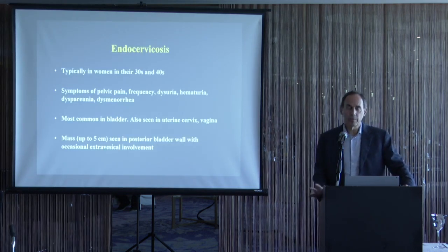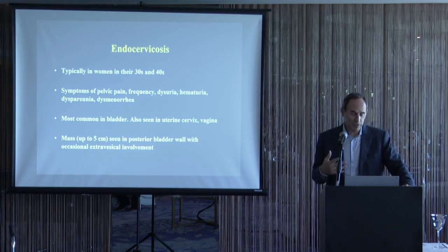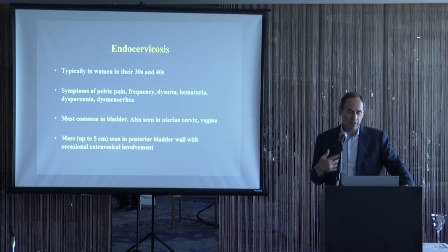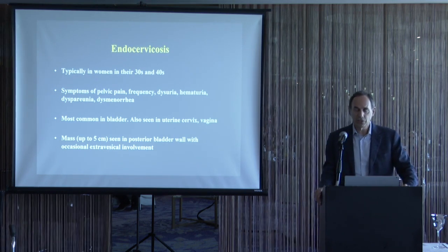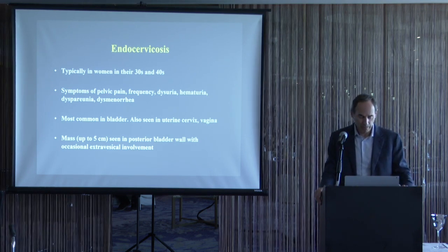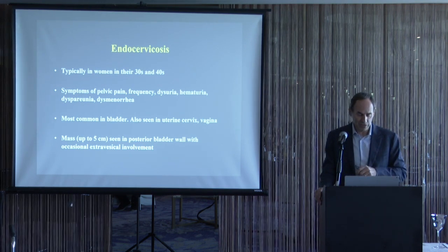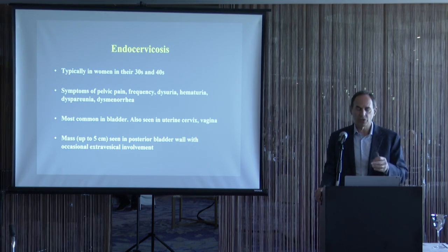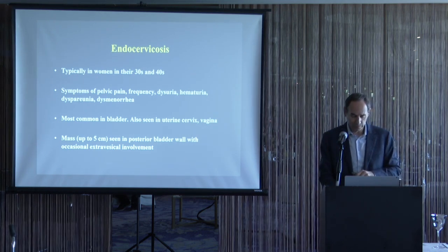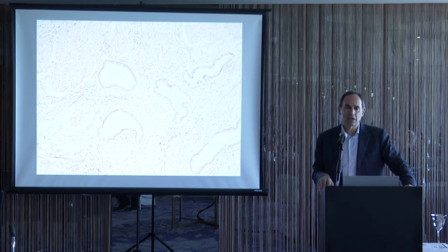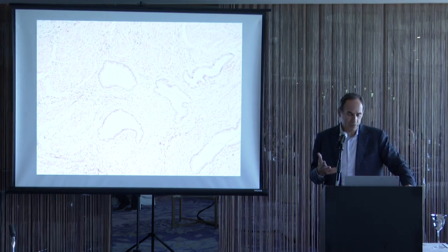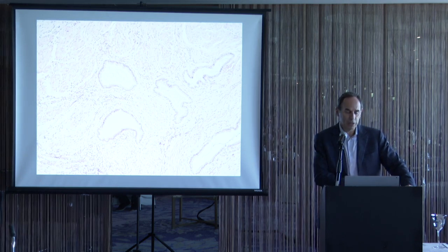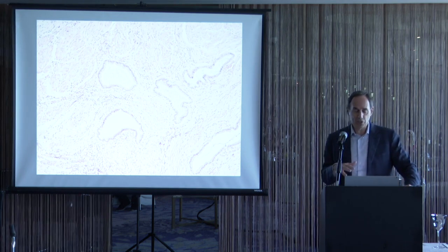Endocervicosis typically occurs in women in their 30s and 40s with symptoms of pelvic pain, frequency, dysuria, hematuria, dyspareunia, and dysmenorrhea. The bladder is the most common site, but it can occur in the GI tracts, uterine cervix, and vagina. These lesions can form masses up to five centimeters, are always in the posterior bladder wall adjacent to gynecological organs, and can involve soft tissue outside the bladder. Several cases have been misdiagnosed as adenocarcinoma because they involve the muscularis propria, but there's no stromal reaction and cytology is totally bland.